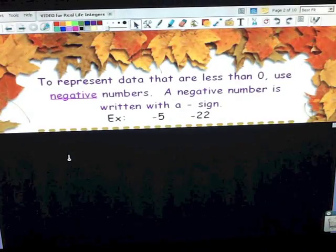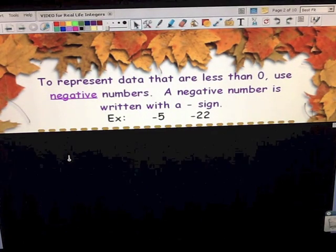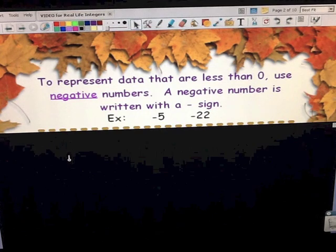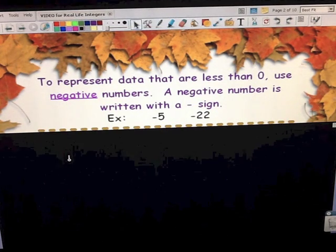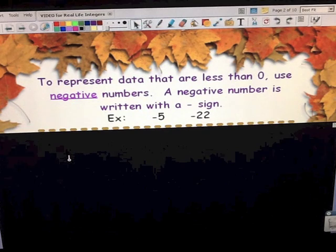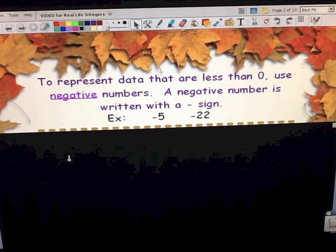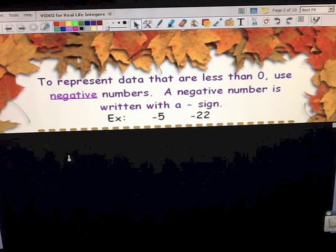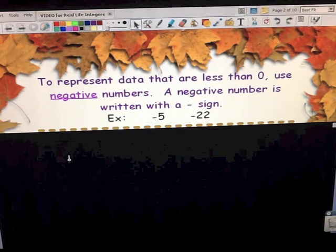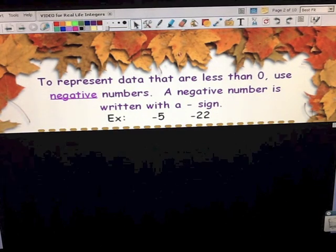To represent data that are less than zero, we use negative numbers. A negative number is written with a negative sign, or you might call that a minus sign or a dash, but it's read negative. So for the example, it's not minus 5 or dash 5 or hyphen 5, it's negative 5. Negative 22.